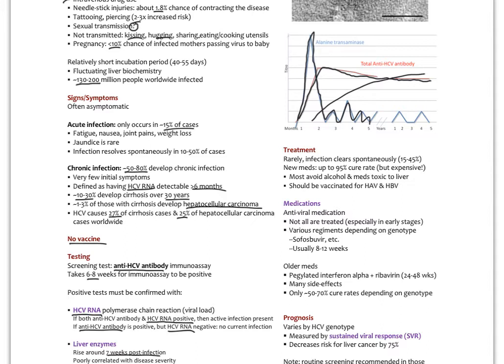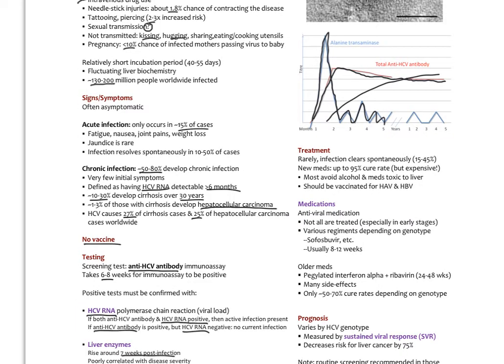The treatment: rarely the infection clears spontaneously. That can be between 15 and 45%. With new meds, the treatment is up to a 95% cure rate. The meds are expensive though. Many of them like Harvoni, this is a three month treatment. I think the costs are around $80,000 for that regimen. Fortunately more and more insurance is covering it.